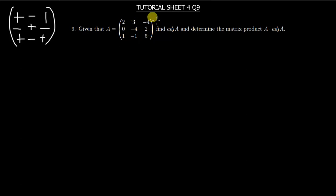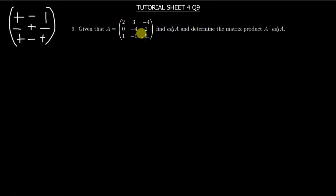To find the matrix of minors, you look at each entry. To find the first minor — the minor for the entry 2 — you get negative 4 times 5, which is negative 20, then minus negative 1 times 2, which is negative 2. So it's negative 20 minus negative 2, which is the same as negative 20 plus 2, giving you negative 18.